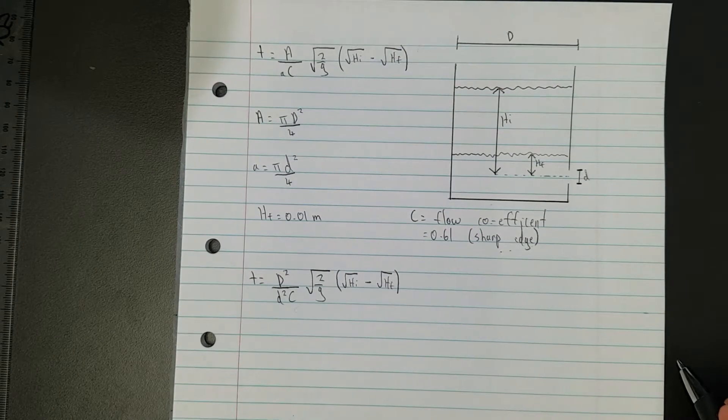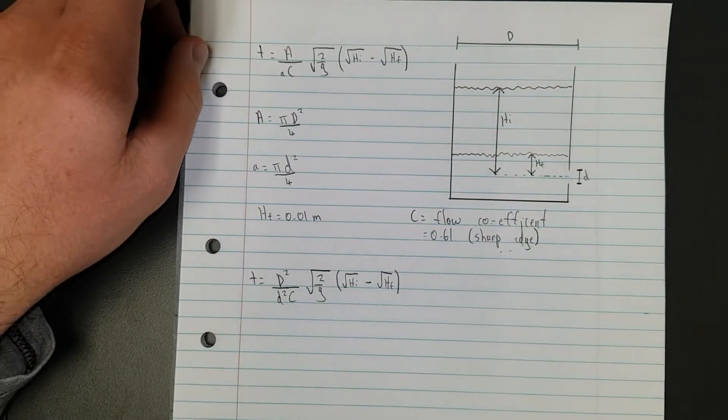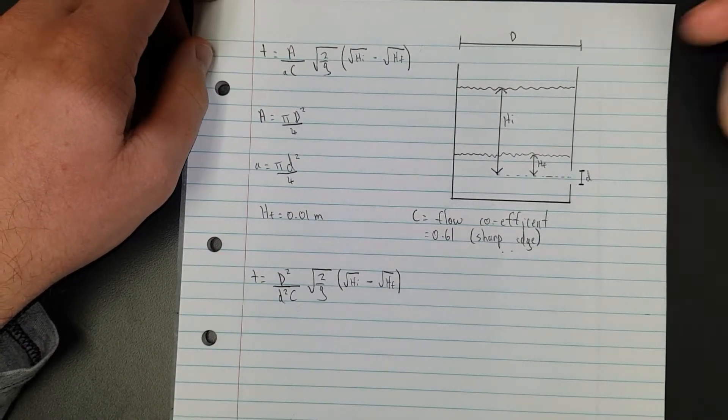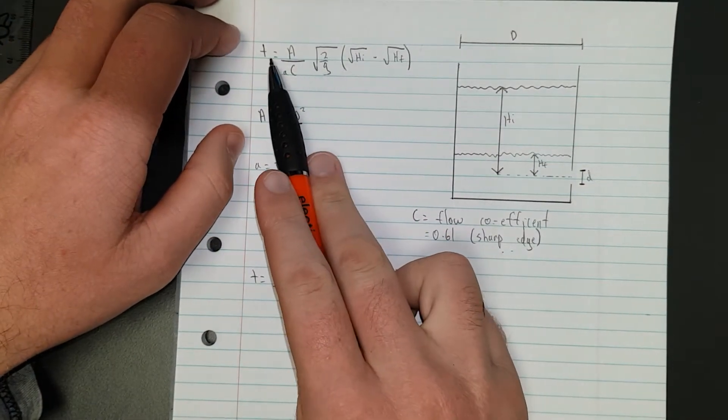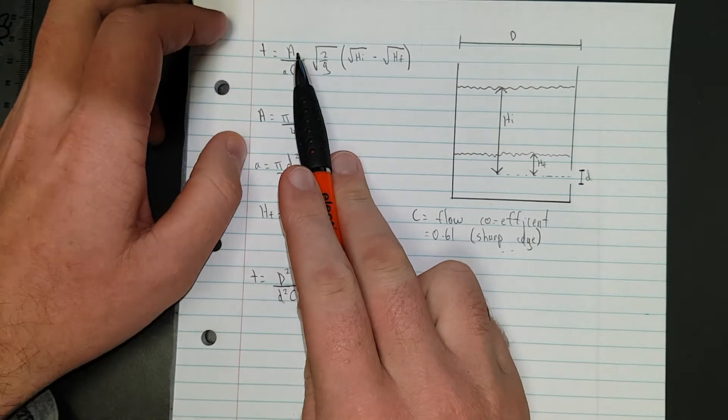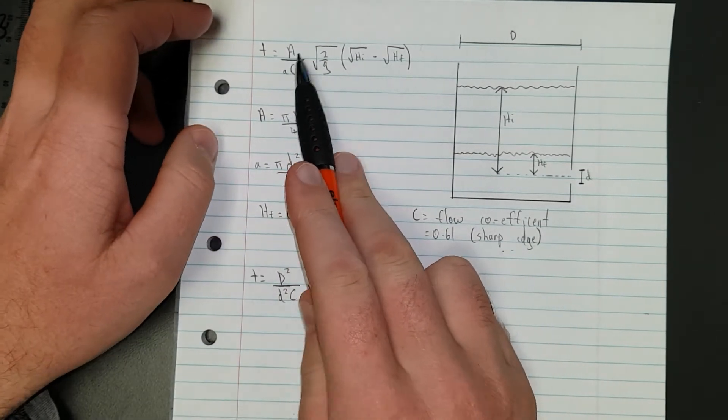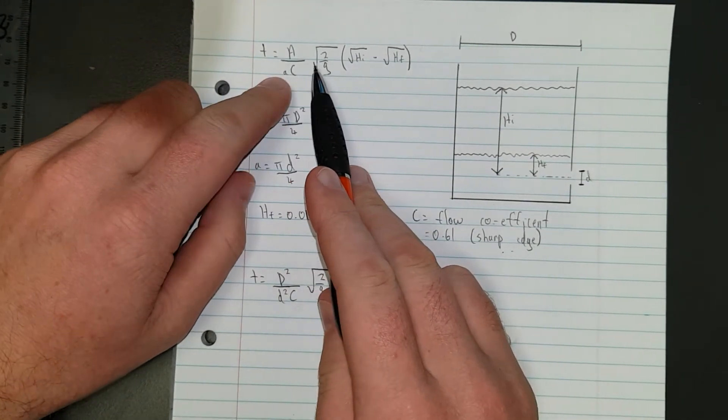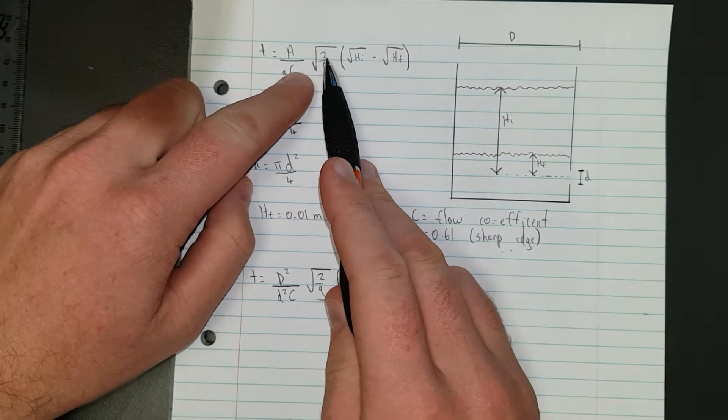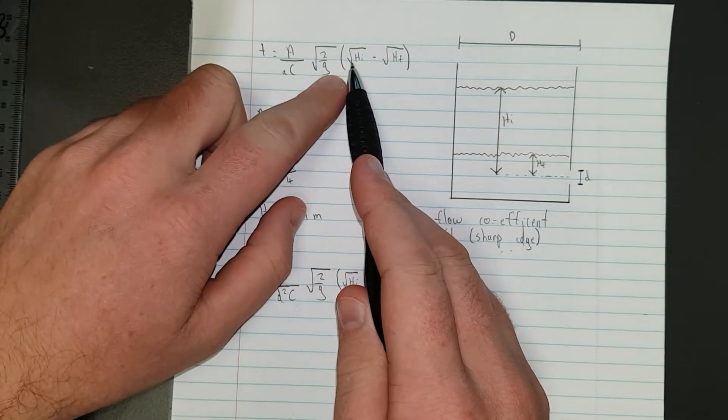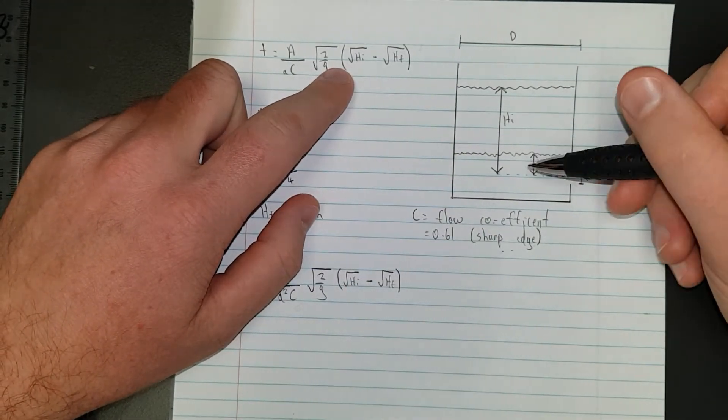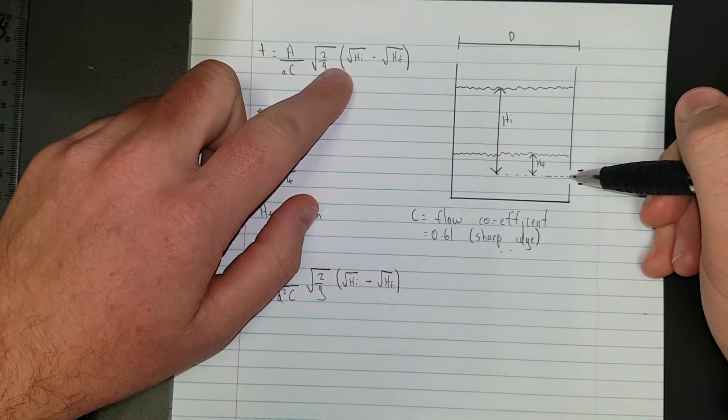In the description link you'll find everything you need. The relationship is time equals A over little a times c, times square root of 2 over g, times square root of the initial height, which is the height from the center of the hole.